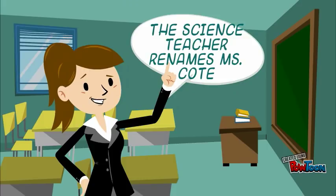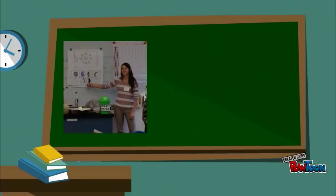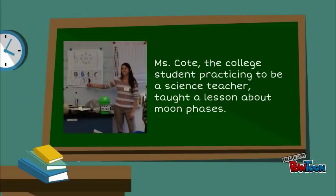An appositive can be long or it can be short. Miss Cody, the college student practicing to be a science teacher, taught a lesson about moon phases. In this sentence, the college student practicing to be a science teacher is the appositive renaming Miss Cody the noun.